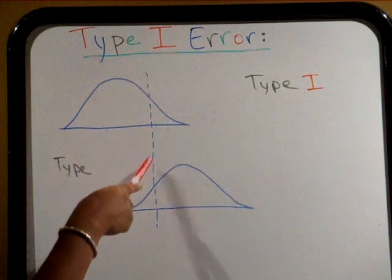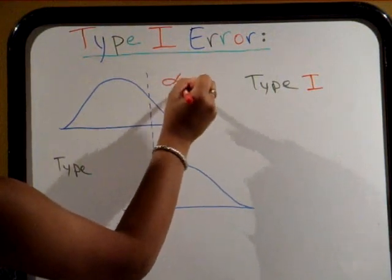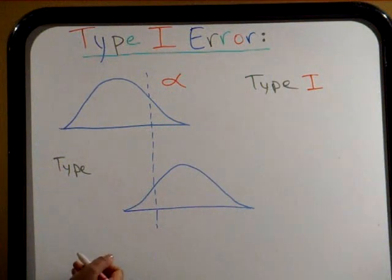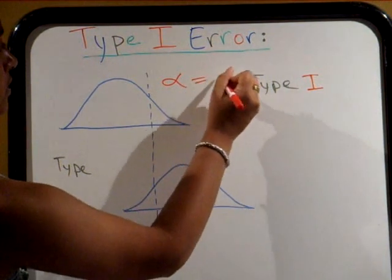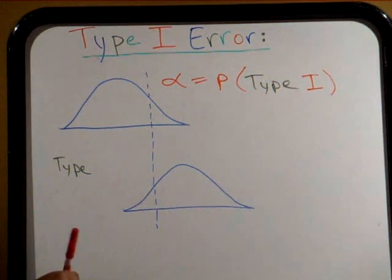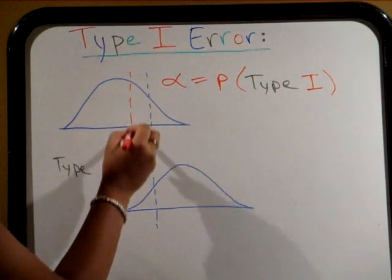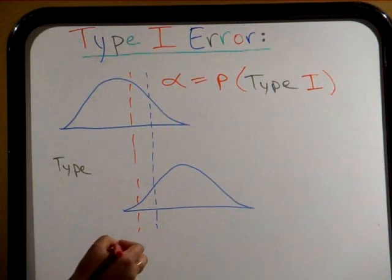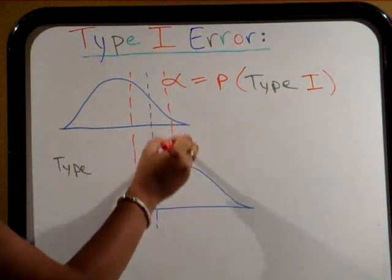However, this line represents the alpha level. Whatever alpha level is chosen is directly equal to the probability of making a type 1 error. The greater the alpha level, the greater the probability of committing such an error, and vice versa.